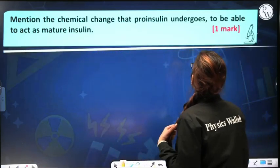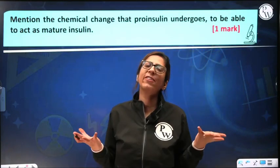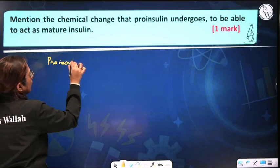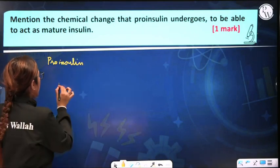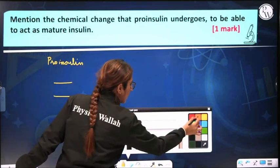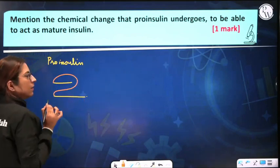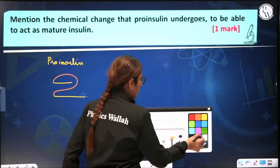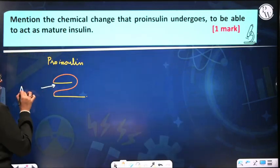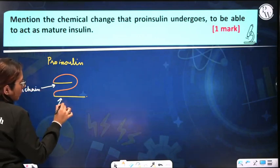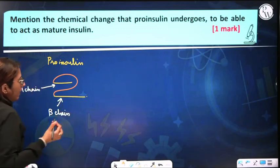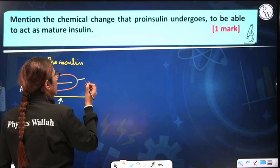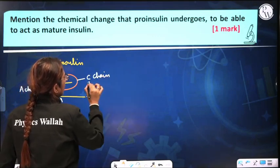Next question: mention the chemical change that pro-insulin undergoes to act as mature insulin. This is a direct question from your notes. Pro-insulin has two chains: the A chain and the B chain, shown in yellow, and a C chain which is curved in nature shown in orange. These two chains are bound to each other by a disulfide bond.